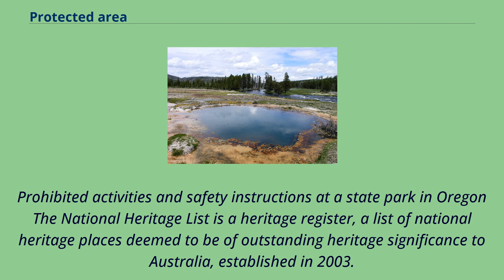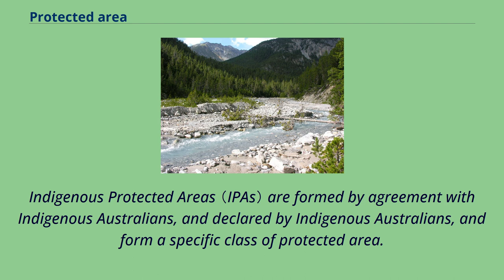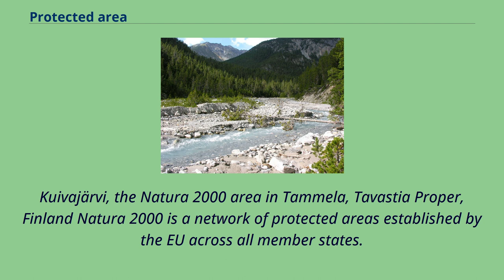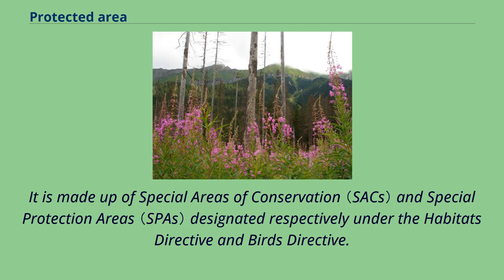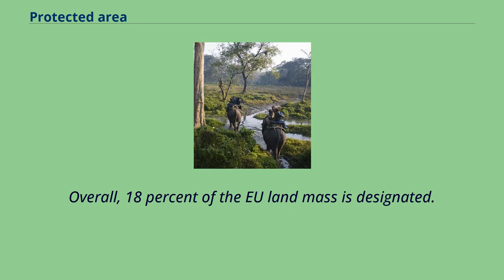Australia's National Heritage List is a heritage register of places deemed to be of outstanding heritage significance, established in 2003, including natural, historic, and culturally significant Indigenous Australian places. Indigenous protected areas are formed by agreement with and declared by Indigenous Australians, forming a specific class of protected area. Natura 2000 is a network of protected areas established by the EU across all member states, made up of special areas of conservation and special protection areas designated under the Habitats Directive and Birds Directive. A total of 787,767 square kilometers are designated as terrestrial sites and 251,564 square kilometers as marine sites, covering 18% of the EU landmass.